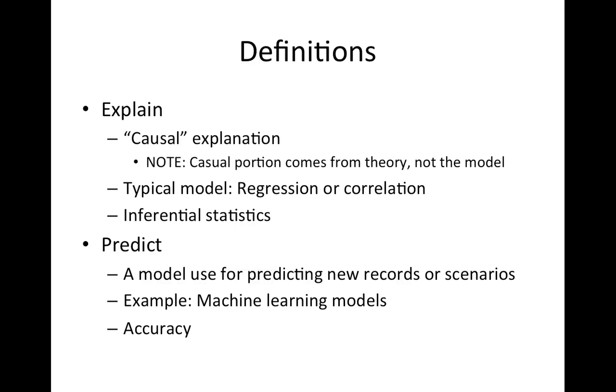Prediction on the other hand - the model, it's the same model, so that's important - but instead it's used to predict new records or scenarios. A lot of machine learning models fall under this category, and linear regression does as well. Accuracy is typically the measure of interest: how accurately can you predict a new record that you haven't yet seen.